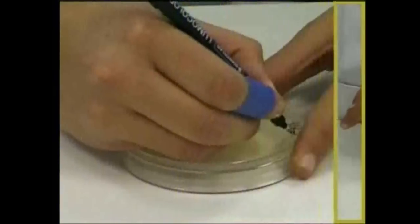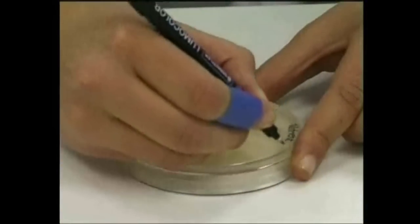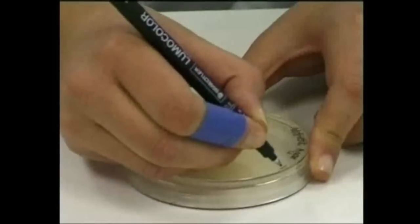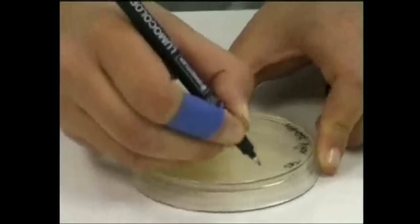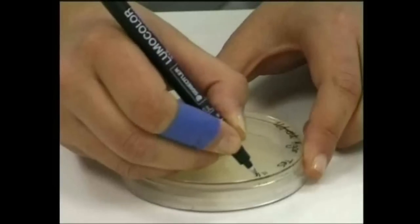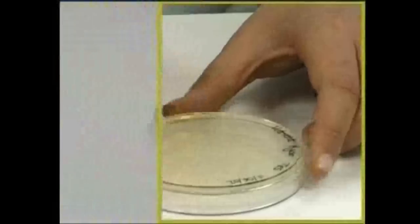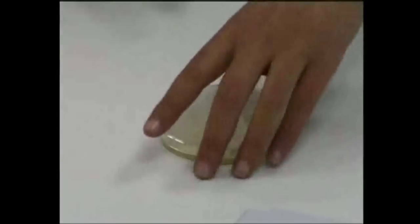All dishes should be labelled with your name, the date, and the name of the microorganism or the source of microorganisms. The base is labelled in preference to the lid because if the two halves become separated, the growth on the medium can still be identified.